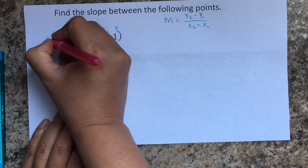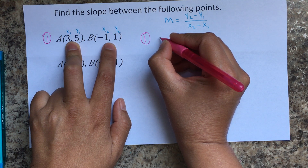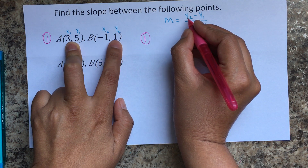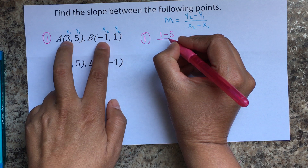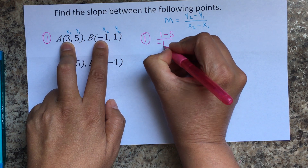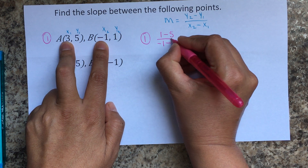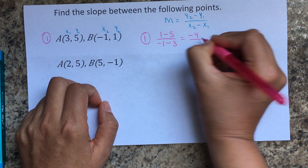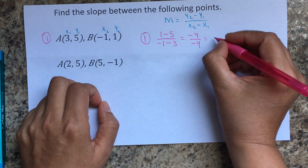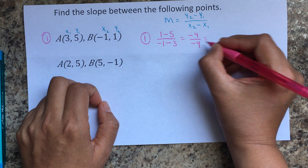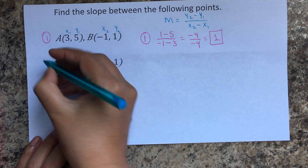Let's start with the first one. I'm going to find the slope of these two points. So y2 minus y1 over x2 minus x1. And so 1 minus 5 is negative 4, negative 1 minus 3 is negative 4. Negative divided by negative is positive, and 4 divided by 4 is 1. So that's my slope for the first example.